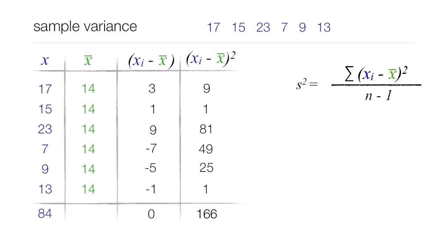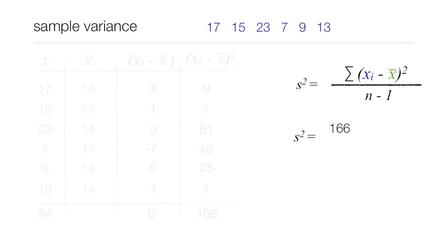The 166 is actually the numerator of that equation. So I can say the sample variance, which I have as s² is equal to 166 divided by n minus 1. n is 6, so it's 6 minus 1, which of course is 5. So the sample variance is equal to 33.2.